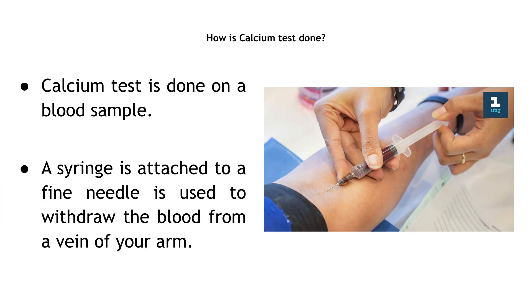How is Calcium Test Done? Calcium test is done on a blood sample. A syringe attached to a fine needle is used to withdraw the blood from a vein of your arm.